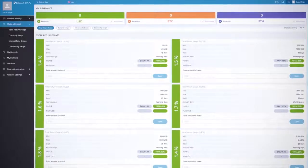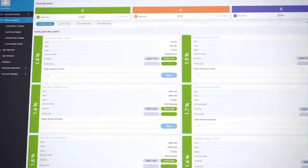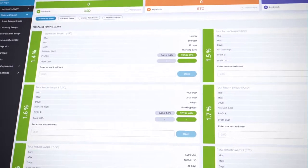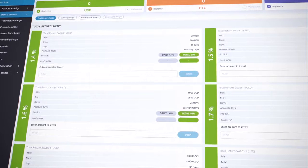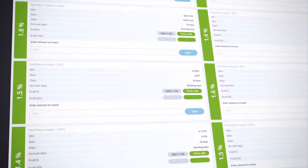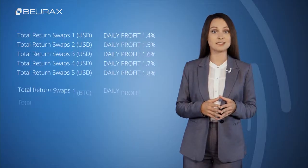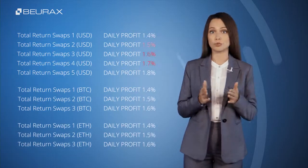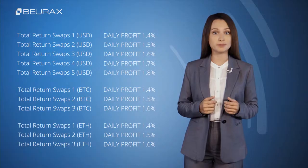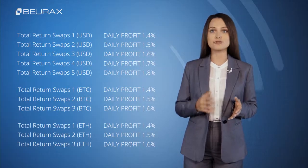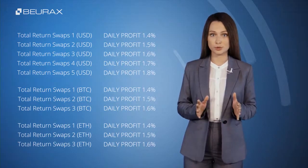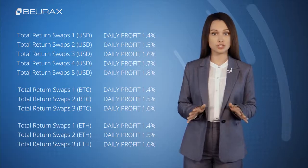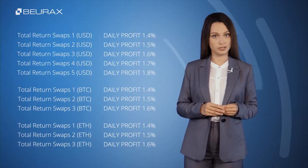Total Return Swaps is a category of investment plans that provides clients with the opportunity to receive daily accruals and payments on deposits, as well as assumes an automatic refund of the deposit amount after its expiration. The daily profit of investors in this category ranges from 1.4 to 1.8 percent depending on the investment plan you choose. The interest rate is fixed and does not change until the end of the investment period.